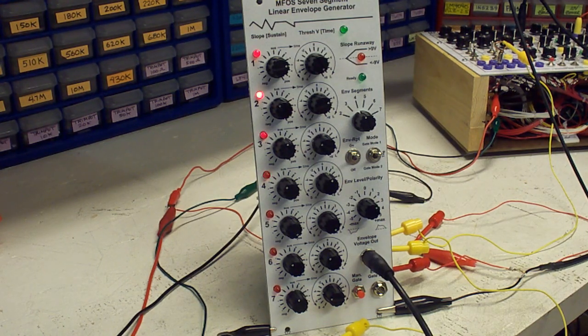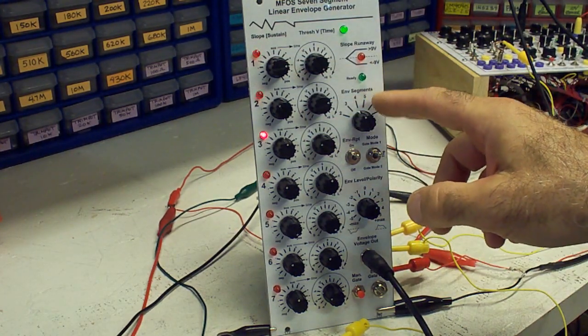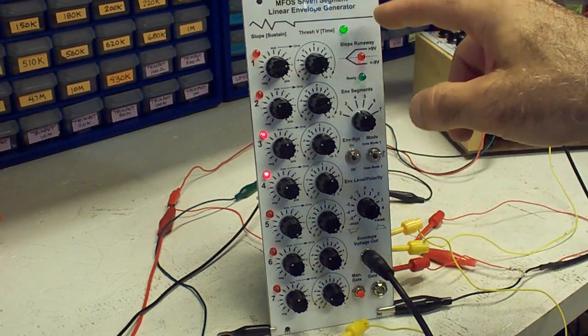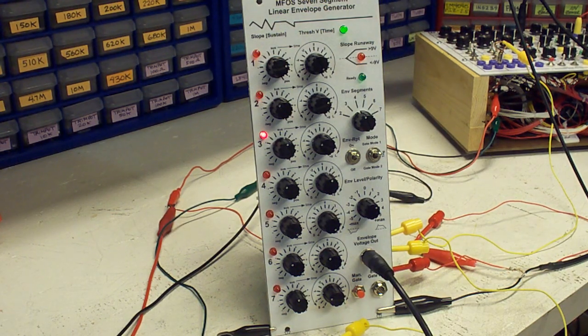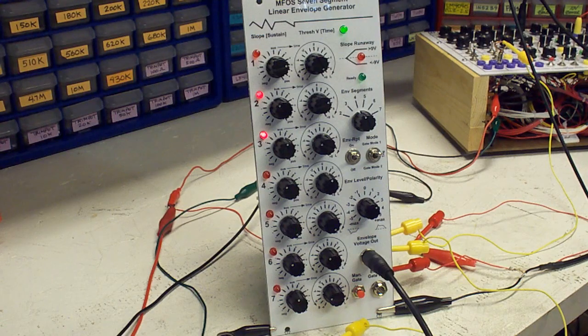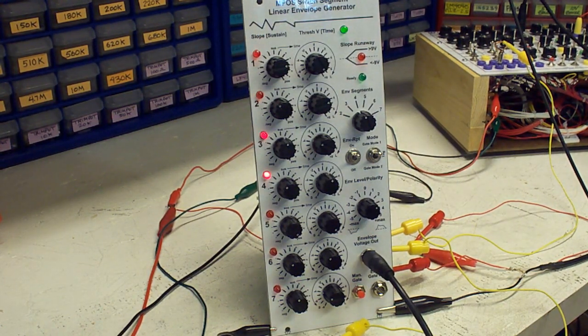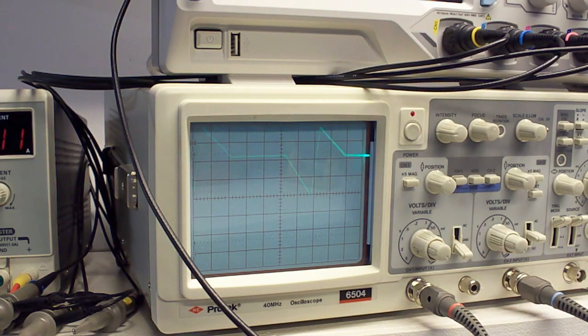I'll go over some of the functionality now. What I have set up right now is just a repeating pattern that uses four segments. I have our event segments set to four. This patterning includes a sustained section here on the third slope or third segment, so what we kind of have is an ADSR type of setup right now. I'll show you that on the oscilloscope. So now we're looking at the oscilloscope where you can see this ADSR pattern. It's repeating.